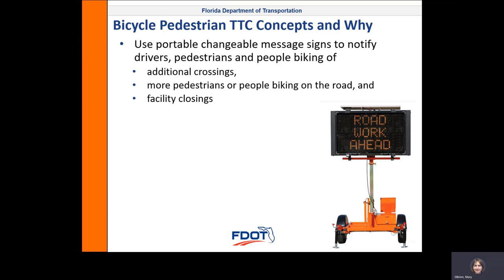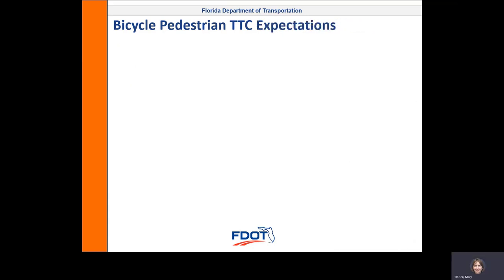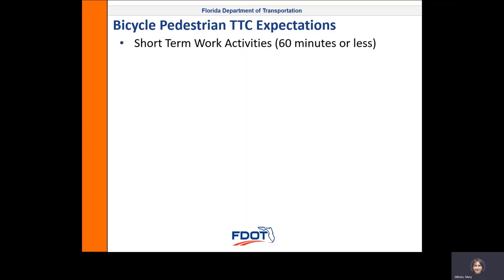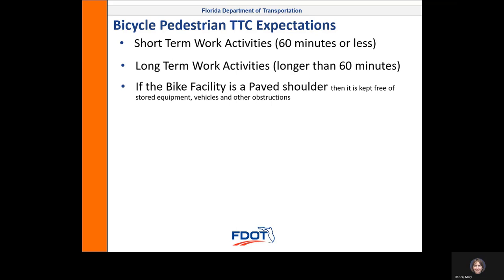If there will be a facility closing, then we want to give everyone as much advance notice along the route and in advance of the construction date as possible. Next, I'm going to go over some basic expectations when it comes to bicycle and pedestrian temporary traffic control. A short-term work activity is 60 minutes or less, and a long-term work activity is anything longer than 60 minutes. If the bicycle facility is a paved shoulder, then it is kept free of stored equipment, vehicles, and other obstructions — like that picture we showed earlier with the construction drums that were in the paved shoulder.